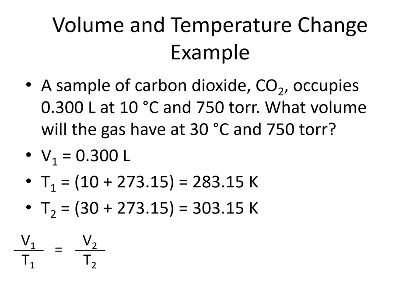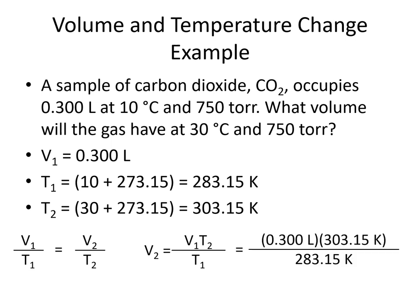Plugging into Charles's law, V1/T1 = V2/T2, we identify that we're solving for V2. We multiply both sides by T2 to get V2 = V1 × T2 / T1. Plugging in our values — V1 and T2 on top, T1 on the bottom — with temperature in Kelvin and volume in liters, we get 0.321 liters.